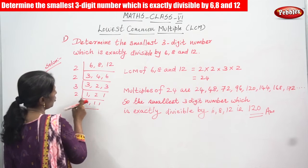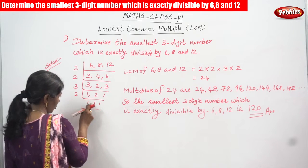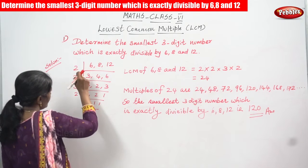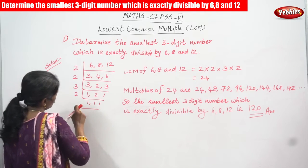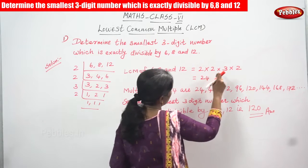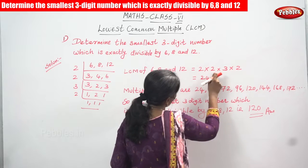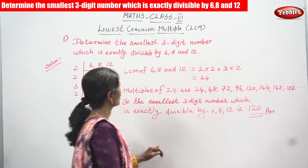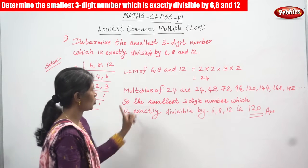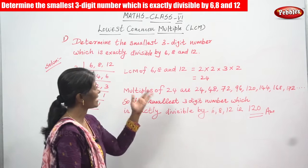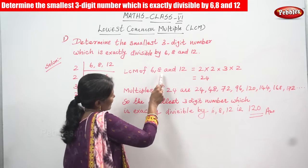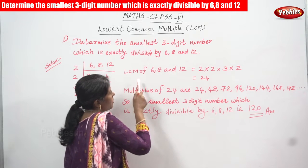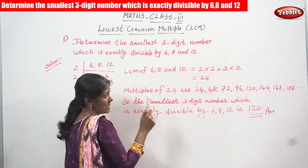Again we take 2. 1 and 2 divided by 2 gives 1. So we write 1 as it is everywhere. The divisors used are 2, 2, 3, and 2. So LCM = 2 × 2 × 3 × 2. Two 2s are 4, 4 × 3 is 12, and 12 × 2 is 24. So the LCM of 6, 8, and 12 is 24.